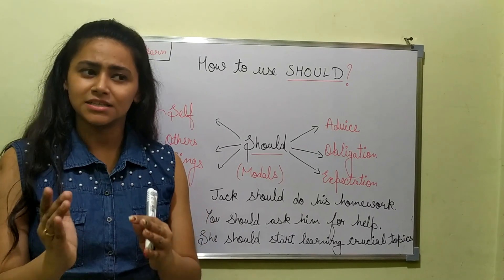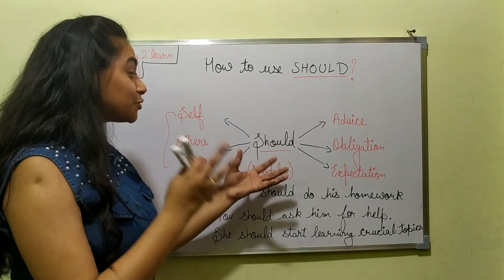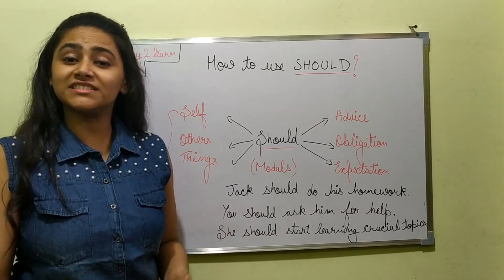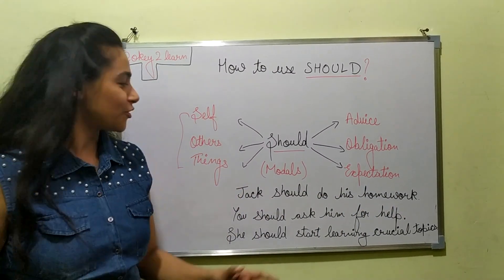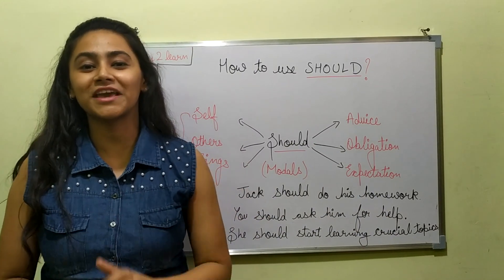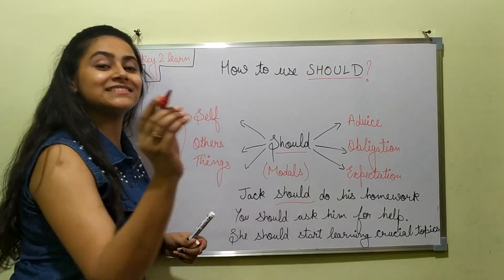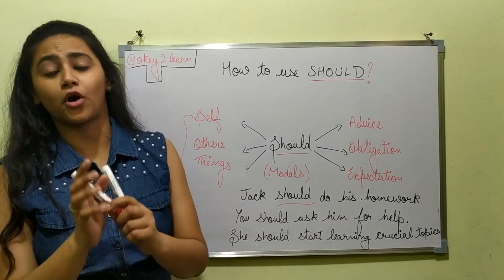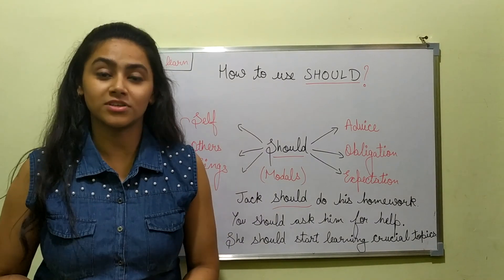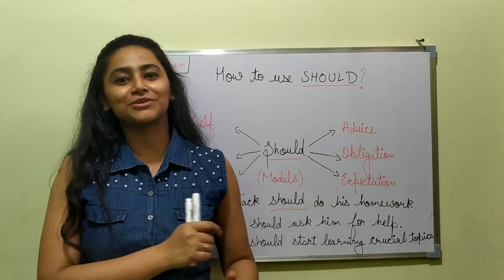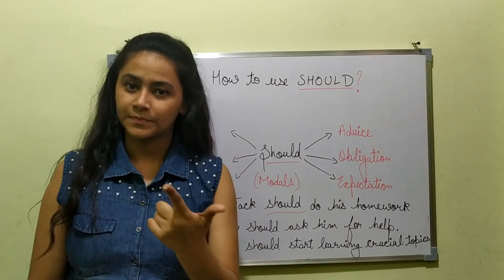Let's look at some examples to make the usage of the modal 'should' a little clearer. The first example: 'Jack should do his homework.' What are we doing right now? We are sharing an expectation from him — we think that Jack should do his homework. So here 'should' is a modal telling us we are putting some expectation on Jack. It can also be used as an obligation — it is his duty. If teacher has given him homework and tomorrow will check the assignments, we can say 'Jack should do his homework' as an obligation.